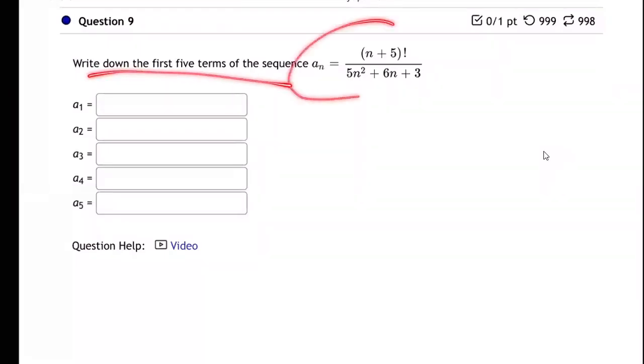Okay, so on this one they give us a big formula and they want us to write down the first five terms of this sequence. So a sub 1 equals - we plug in 1.